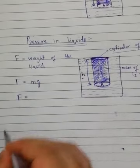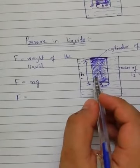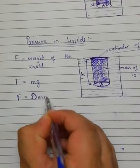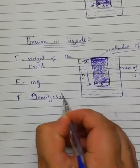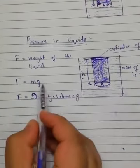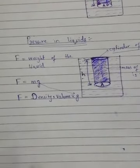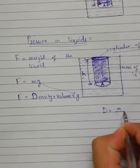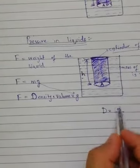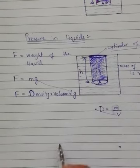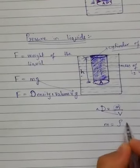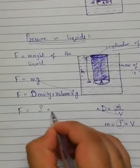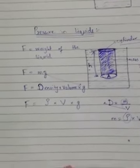Now, how can we find the mass if I am talking about the liquid? I can find out the mass with the help of this formula: density multiplied by volume, multiplied by g. In the previous lecture we discussed that density is equivalent to mass over volume, and if we want to find the mass, we rearrange to get mass equals density multiplied by volume. This rho is the symbol for density.